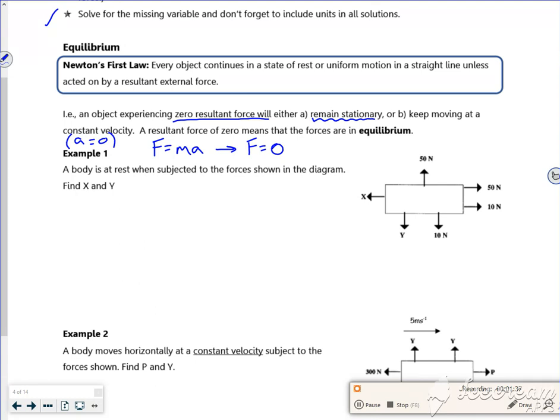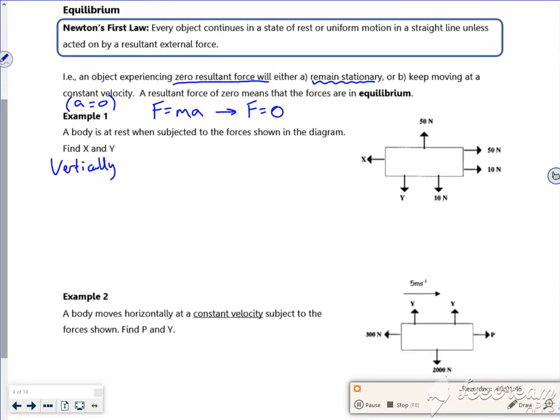So let's look vertically. So if it's equal to zero, my up forces take away my down forces are equal to zero. So in this case I've got 50 going up and I've got Y going down and 10 going down, and that's equal to zero. So that would make sense that Y is 40 newtons. I'll just do a bit of a rearrange.